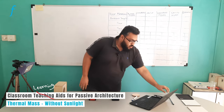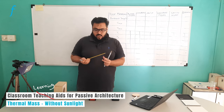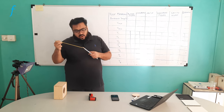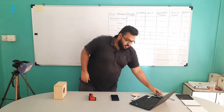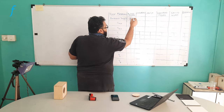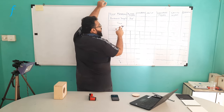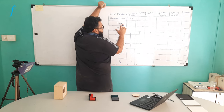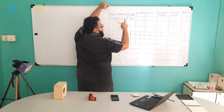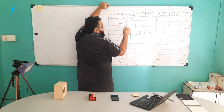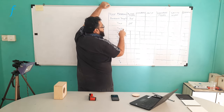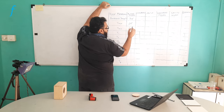First, we will note down the ambient temperature of the surrounding using this lab thermometer. It is showing a reading of 24 degrees Celsius. I have taken plain glass and I am noting down the ambient temperature as 24 degrees. The second reading is called T max — we assume T max to be approximately 5 degrees greater than the ambient temperature. So if the ambient temperature is 24 degrees, T max is assumed as 29 degrees, and T min is the same as the ambient temperature, which is 24 degrees.